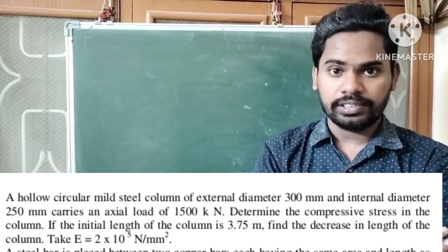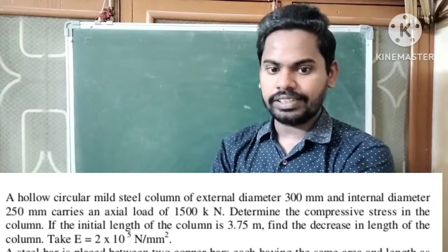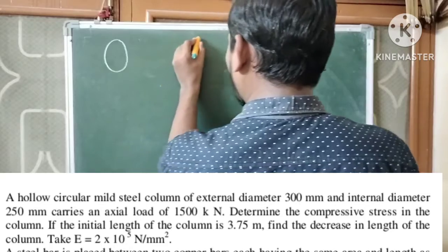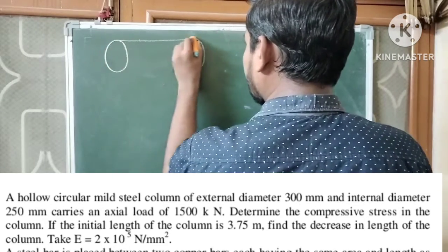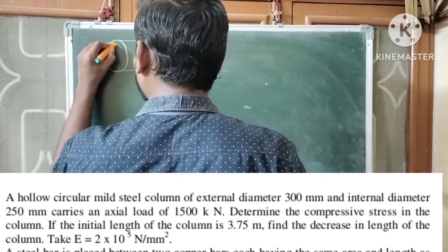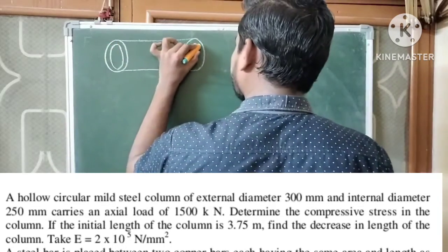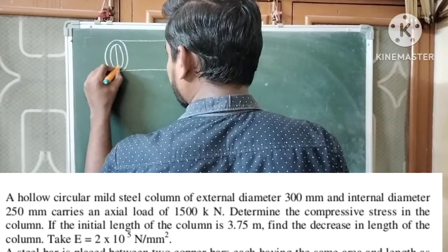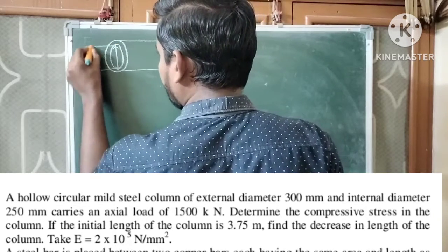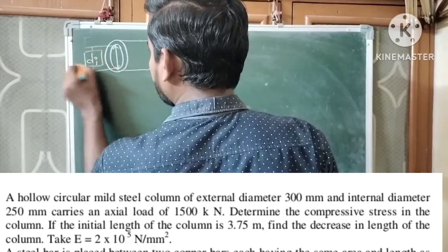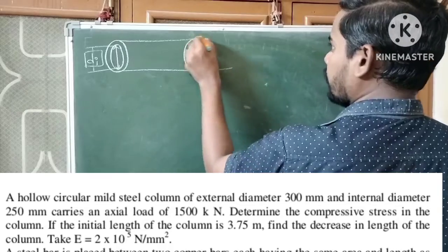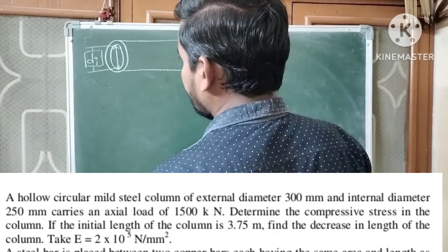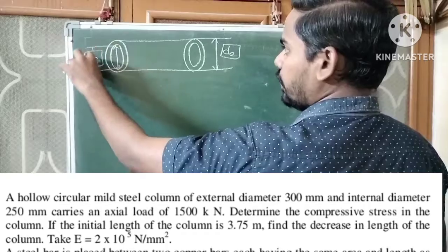Here E means Young's modulus. There is a hollow circular mild steel column — let us sketch the diagram. A hollow column has two diameters: internal diameter D_I and external diameter D_E.